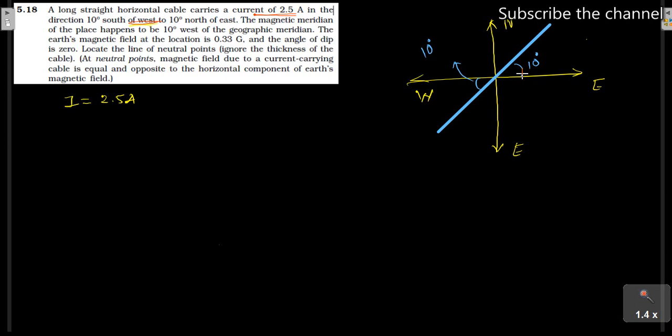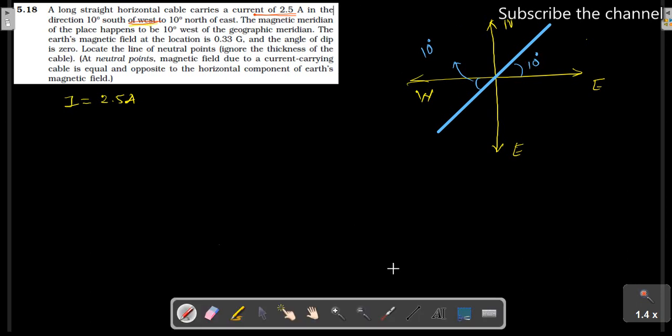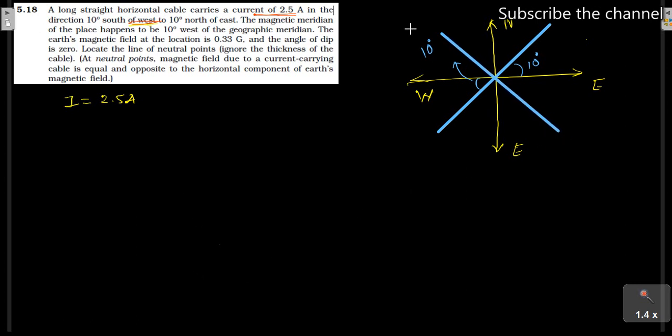The magnetic meridian of the place happened to be 10 degrees west of geographic meridian. So with geographic meridian, we have made 10 degrees with this. Here we have made 10 degrees with geographic meridian.